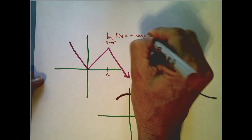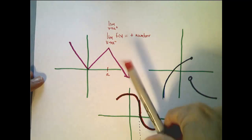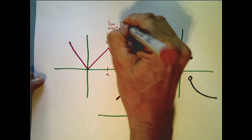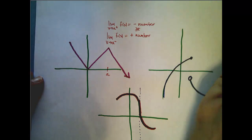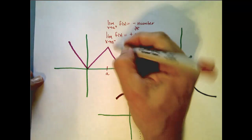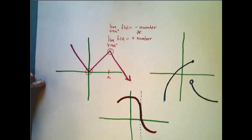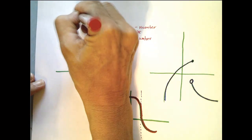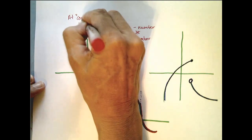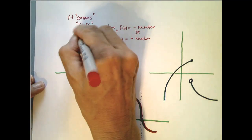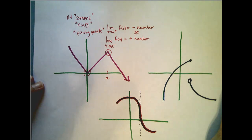And we see that the limit as x approaches a from the right, so the slopes of my tangent line of f of x, equals some negative number. Since these can't be true at the same time, the left and the right hand limits don't exist, so I know that it is not differentiable there. The same is true here. So at corners, kinks, pointy points, our function fails to be differentiable.